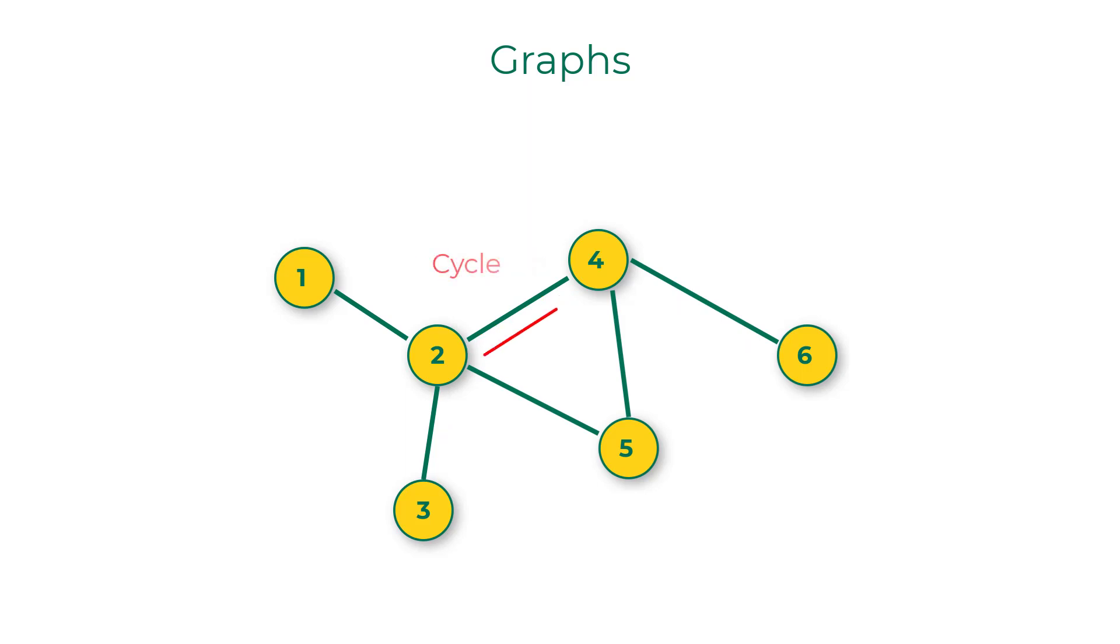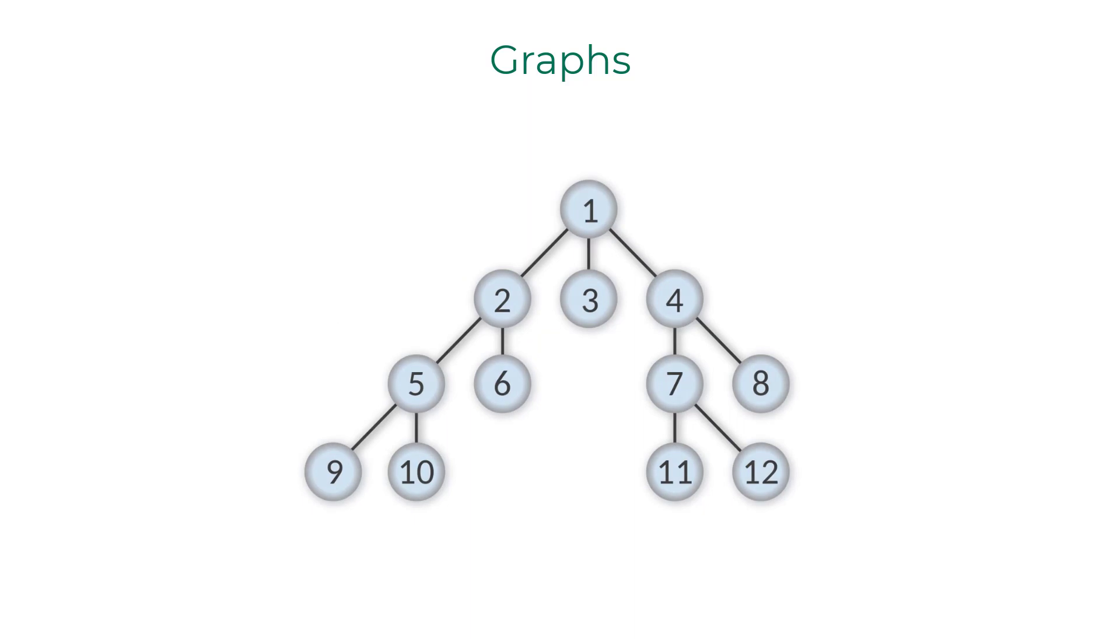A path is called a cycle if it starts and ends in the same node. A graph is a tree if it is connected yet does not contain any cycle. It consists of a root and it has leaves.